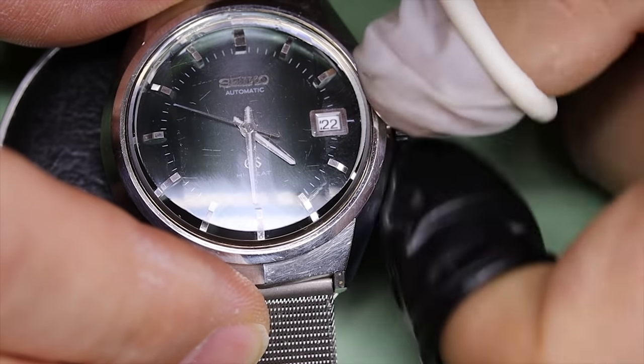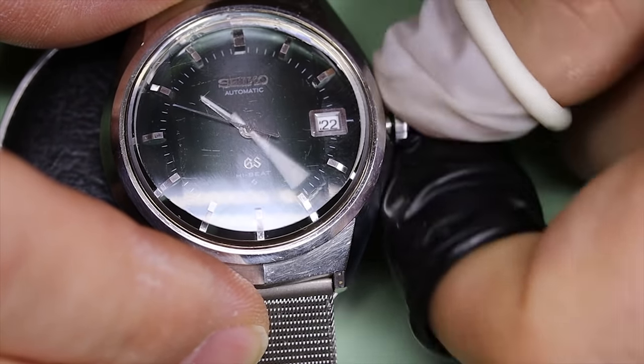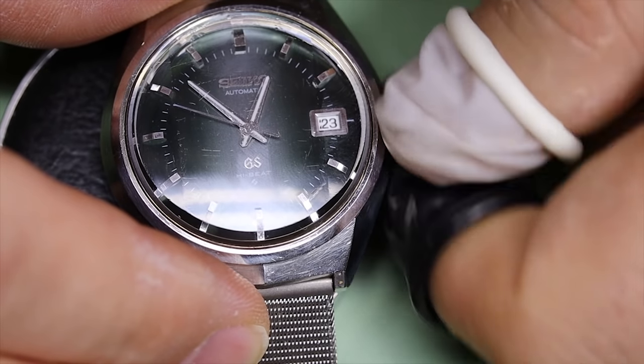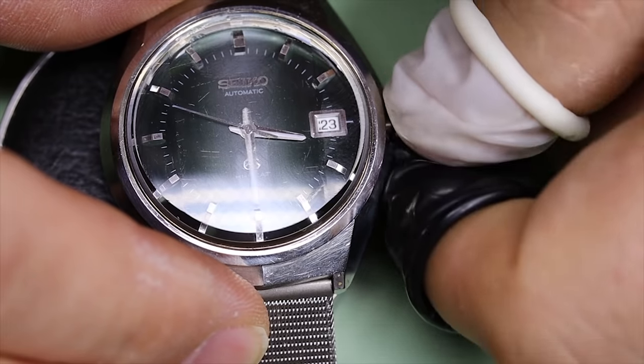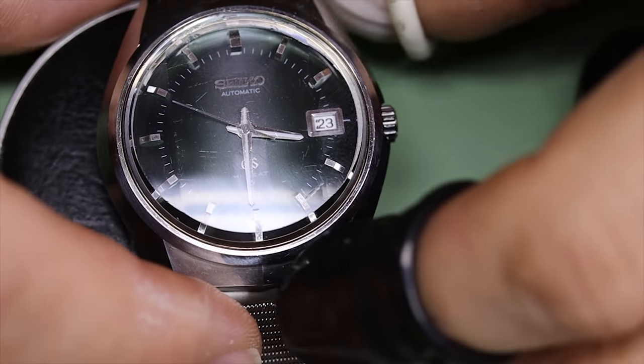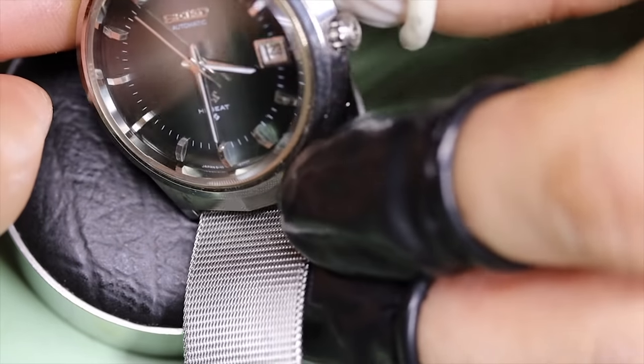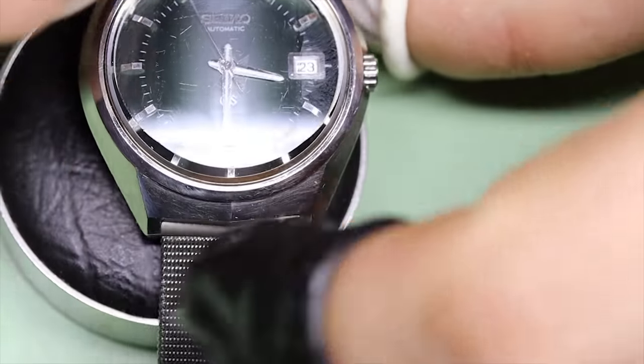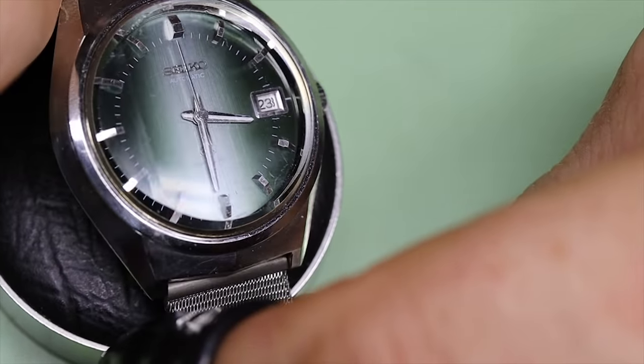It has this faceted crystal, and with the angular case, this type of design is perhaps more known in the King Seiko Vanac series, but this watch looks spectacular. There are a few issues however - the mineral glass faceted crystal has quite some chips and damage.